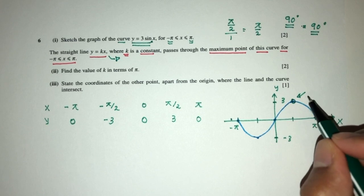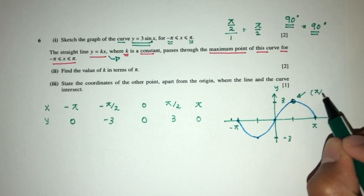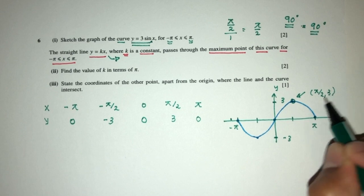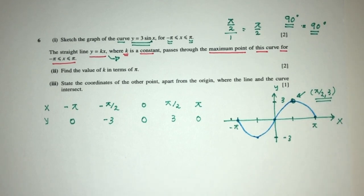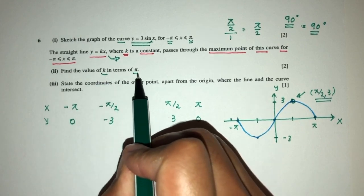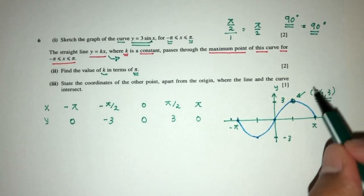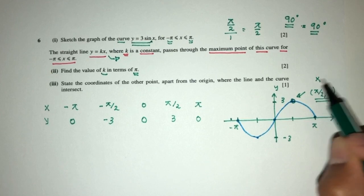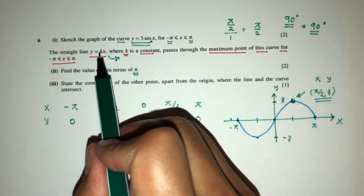It will be this point. This point is a maximum point, which is the point pi by 2 and 3. This is the maximum point of the curve. So we have to use this information to find the value of k in terms of pi. So pretty easy. This is the point, which is the x value and the y value.